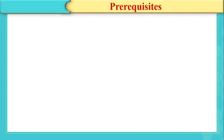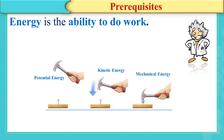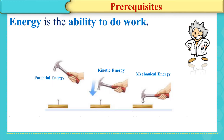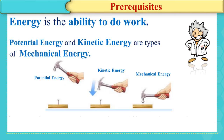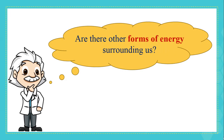We have learned in the previous sessions that energy is the ability to do work. The mechanical energy of an object is the sum of the kinetic energy and potential energy possessed by this object. Potential energy and kinetic energy are two types of mechanical energy. Mechanical energy is one form of energy. Are there other forms of energy surrounding us?